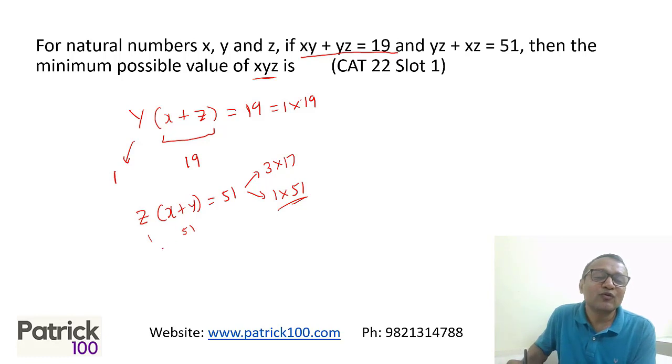Now 51 can be, if you look at 3 into 17, or it can be 1 into 51. If you want X, Y, Z to be minimum possible, the ideal should be as close as possible. They should not be far off. But if I put 1 and 51, it may not satisfy. For example, if I put 1 and 51, Z will become 1, X plus Y is 51, which will not satisfy. Because Y is 1, X is 50. If X is 50, X plus Y, Z will not satisfy. So I will ignore this. We look at 3 and 17.